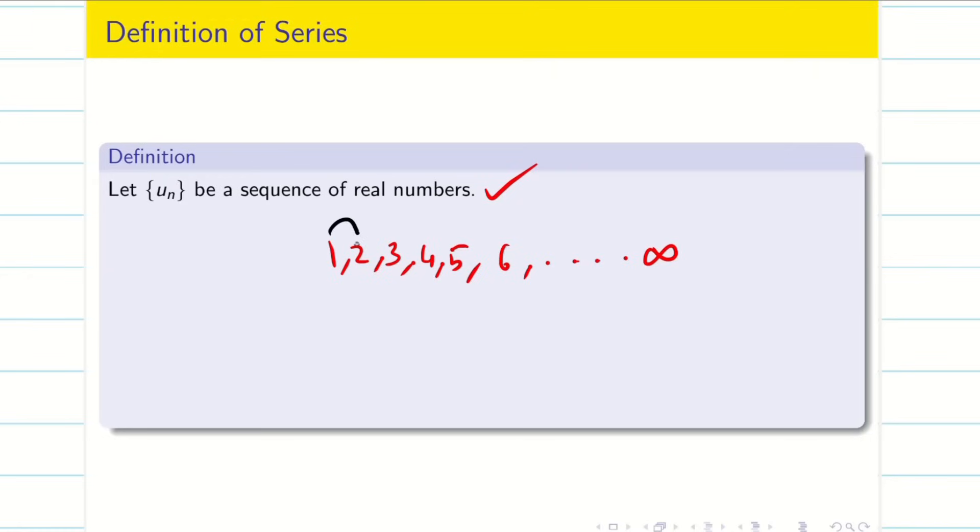You can see the difference here is 1. So if I say 6, I can tell the next number is 7. Similarly, you take the set of all even numbers. This is also a sequence.